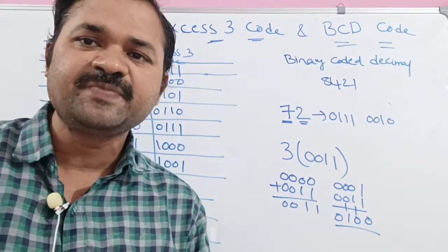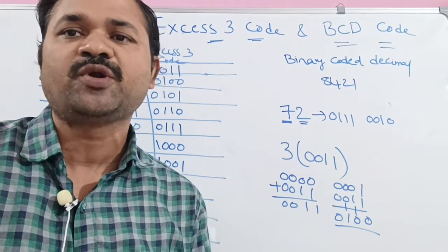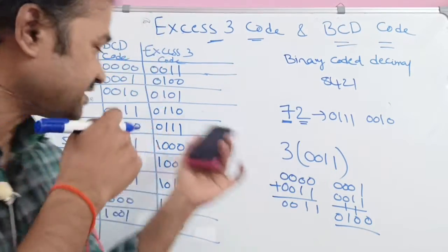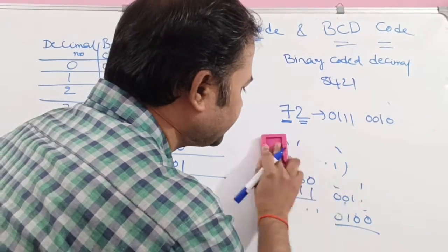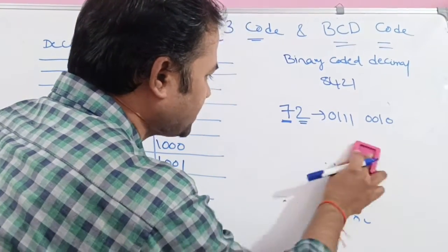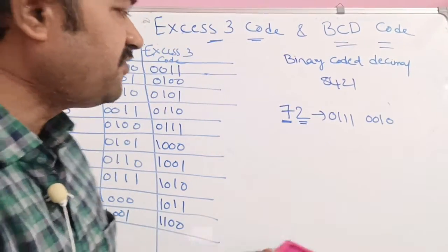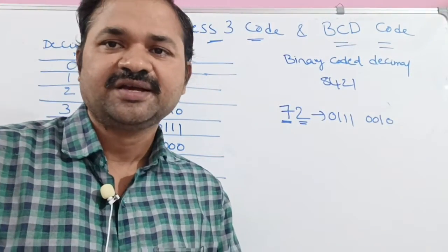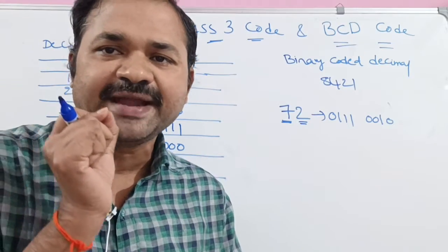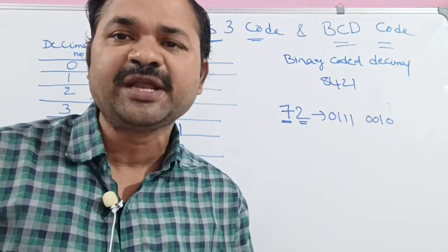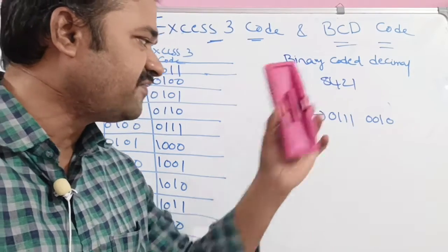So XS3 code means simply we need to add 3 to the corresponding decimal number or the corresponding BCD code. Now let us represent XS3 for the number 72. We already represented it in BCD notation, so XS3 means we simply add 3 to the corresponding BCD number. Here we have 2 digits: 7 and 2.